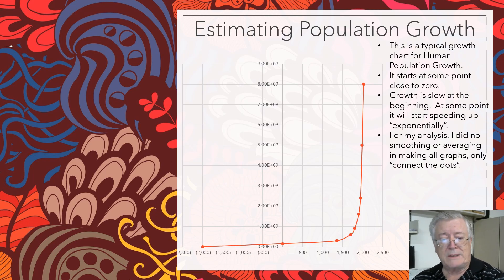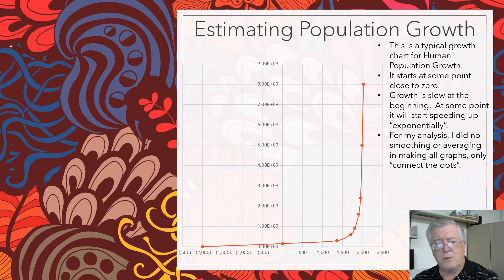This is a typical population growth. Over on the left, it starts close to zero or close to some baseline. As the population grows, it starts out real slow. Obviously, if you start with eight people, it takes time to build up a population. Once you have 200 million, then the population grows faster. So this is what it would look like.